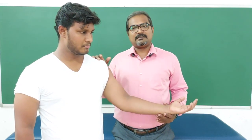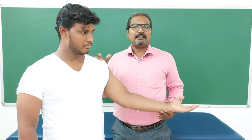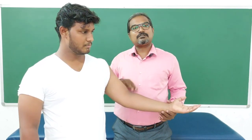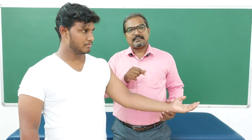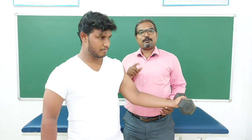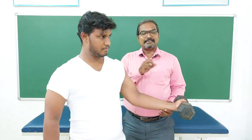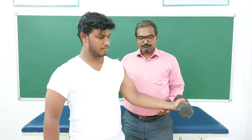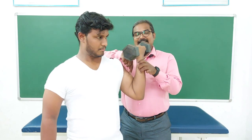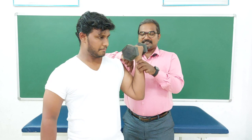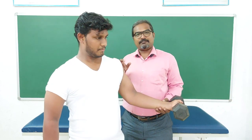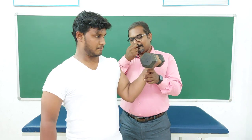Isotonic muscle contraction is whenever there is a movement taking place — the tension also increases and the length also changes. With an external load applied to the biceps muscle, when flexion of the elbow is taking place there is a movement and a tension generated in the muscle, and there is a change in the length of the muscle. This is called concentric muscle contraction, where the insertion point comes towards the originating point.